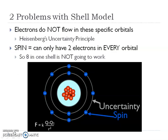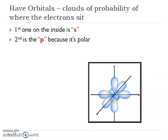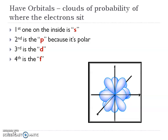He talked about the two problems with that shell model, and then he talked about orbitals. These orbitals really are the shapes and how many electrons are going to be there. So the S is a circle, the P is a dumbbell, the D is more like a clover shape, and the F looks like a flower, just kind of bursting everywhere.